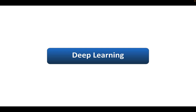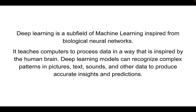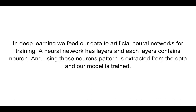In this lecture, we are going to learn about deep learning and artificial neural networks. Deep learning is a subfield of machine learning inspired by biological neural networks. It teaches computers to process data in a way that is inspired by the human brain. Deep learning models can recognize complex patterns in pictures, text, sounds, and other data to produce accurate insights and predictions. In deep learning, we feed our data to an artificial neural network for training, and the network has layers where each layer contains neurons, using which patterns are extracted from the data.